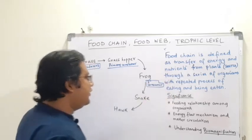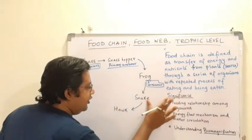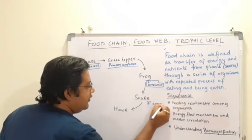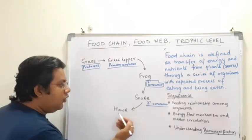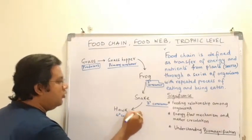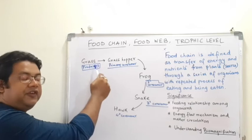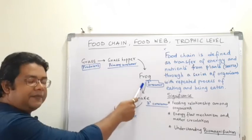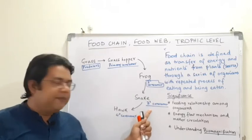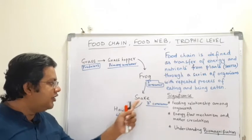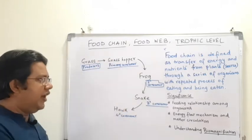Frog is eaten by a snake, so the snake becomes a tertiary consumer. The snake is then eaten by a hawk, so the hawk becomes a quaternary consumer. So in this food chain: producers are eaten by the primary consumer (grasshopper), which is eaten by the secondary consumer (frog), then the tertiary consumer (snake), and finally the quaternary consumer (hawk).